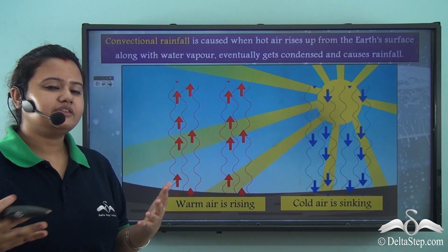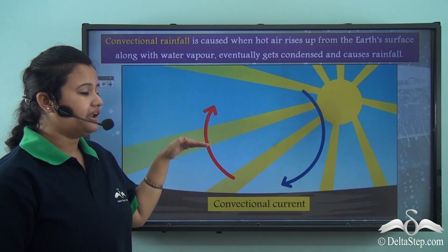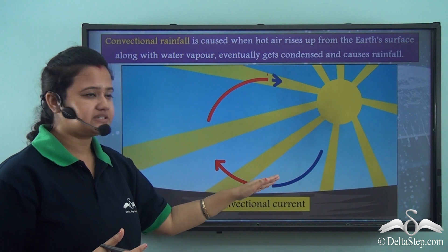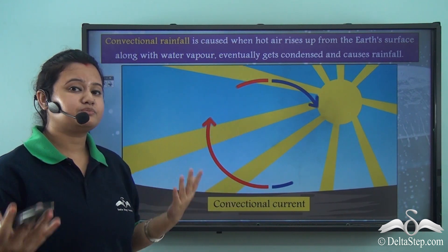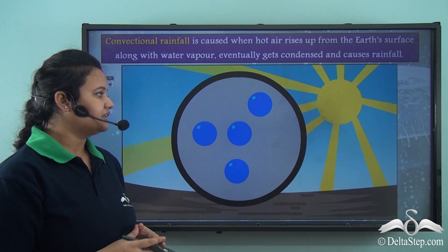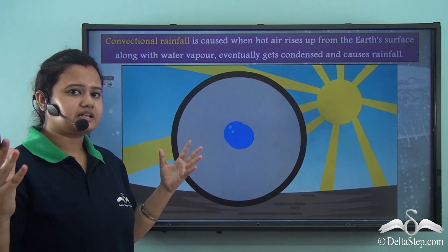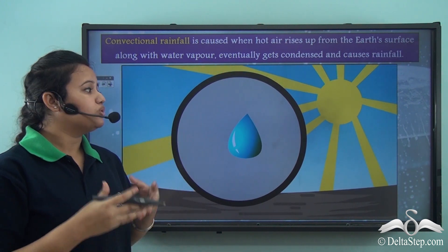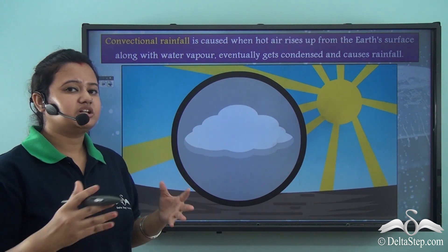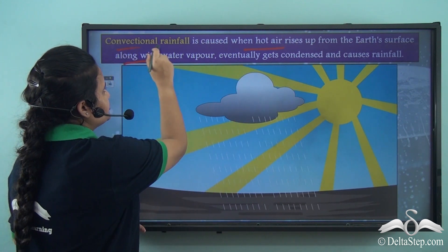Another type of rainfall occurs when the sun heats the ground, and warm ground heats the air above it. Hot air rises while cold air, being heavier, sinks down — forming convectional currents. Water vapor in the warm air condenses and forms clouds, which eventually become too heavy and shed rainfall. This type of rainfall, induced by convectional currents, is known as convectional rainfall.